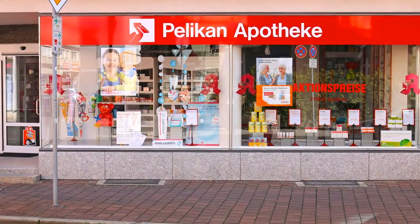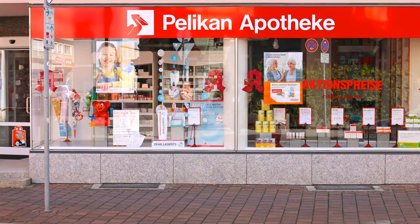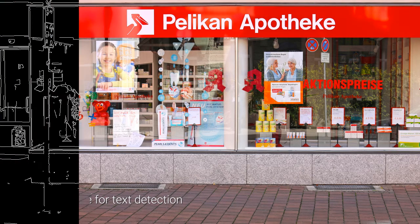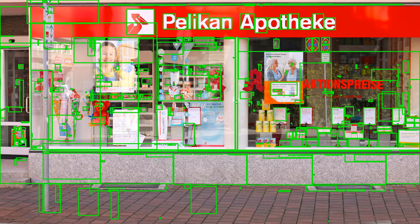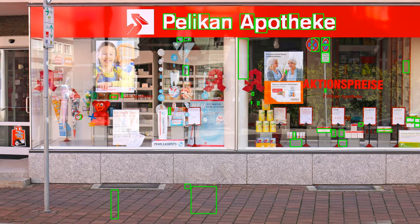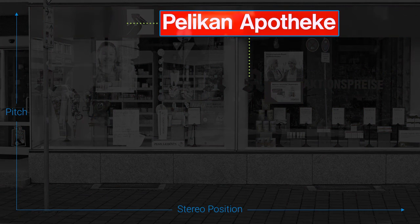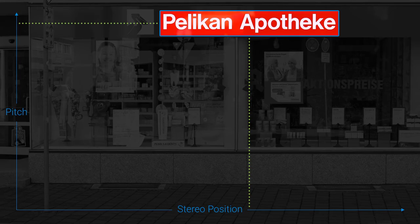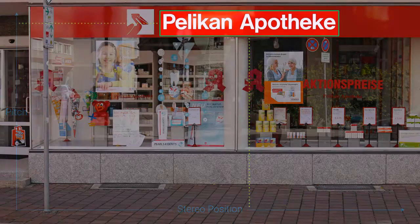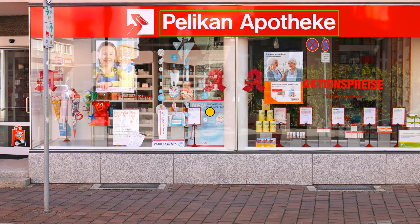The purpose of this module is to enable the perception of text in the field of view of the user. In order to achieve that, we first use the Stroke Width Transform algorithm to identify text areas within the current video frame of the world camera. Once an area has been detected, a sound is played according to the position of the text. Through that, the user can estimate where the text is located and is able to move his eyes into that direction. If he reaches the area, then the text is read to him.